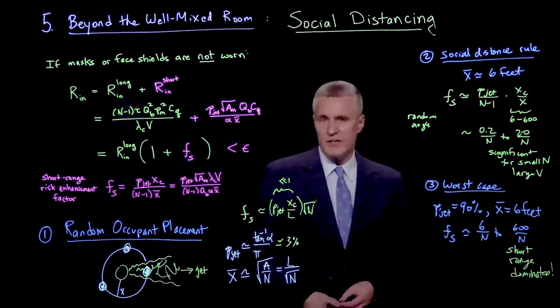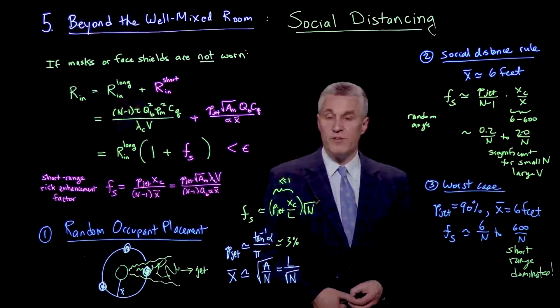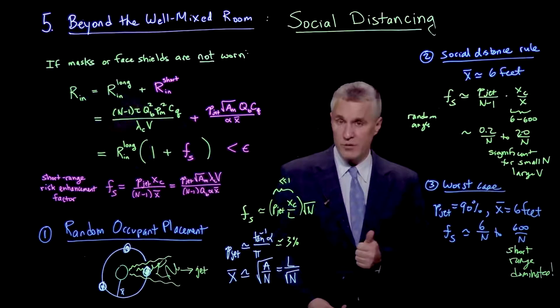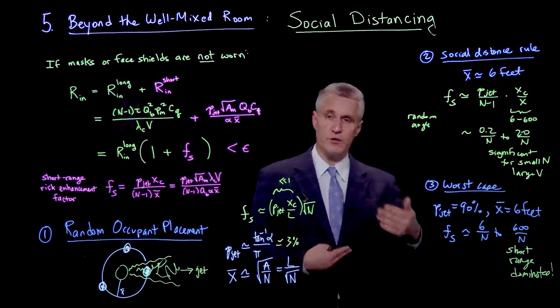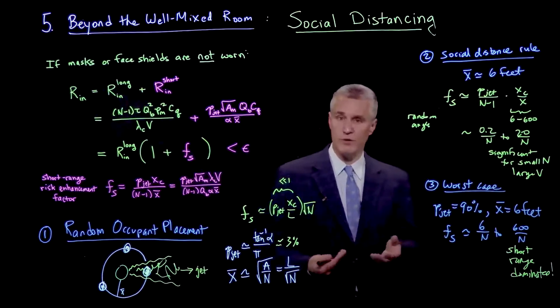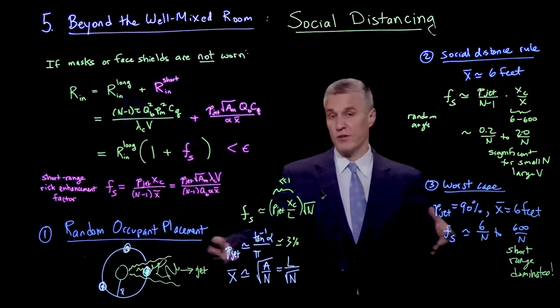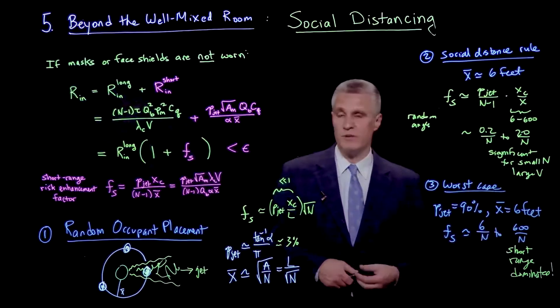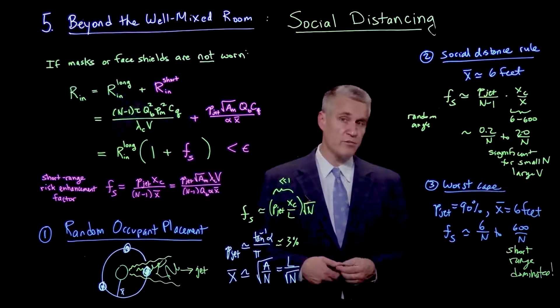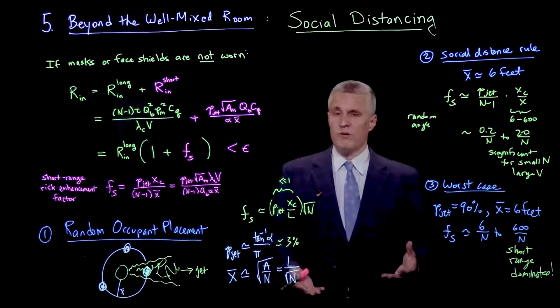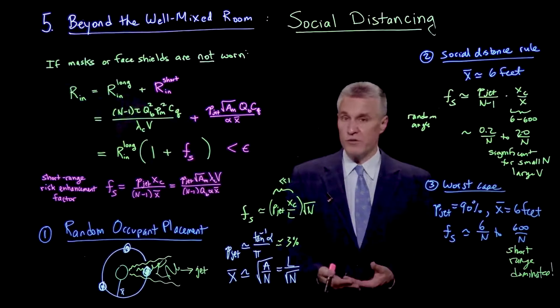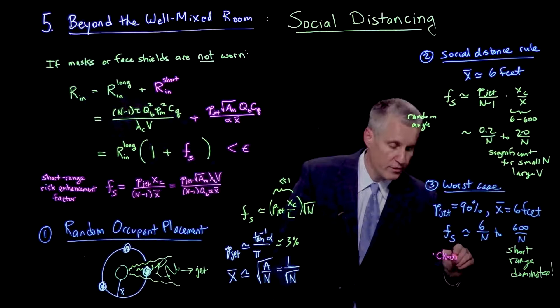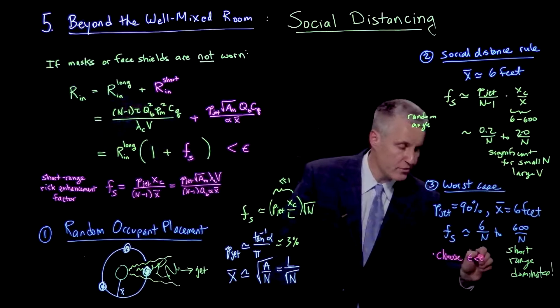So then how do we mitigate against this short range transmission risk, which is going to be worse when we have people that are not wearing masks or face shields and are in close proximity and facing each other for long periods of time? Especially in a larger room in a lower occupancy where the n is maybe not so big and we don't have to worry as much about long range transmission. Well, one way to proceed is to continue using the universal guideline that we've derived right here for long range and simply choose a small epsilon much less than 1.